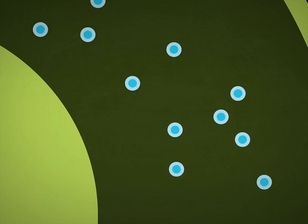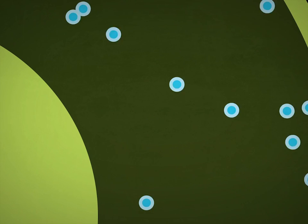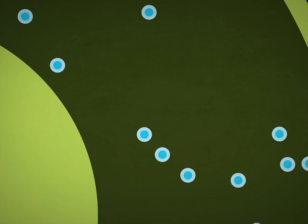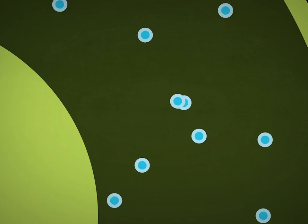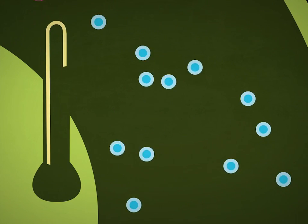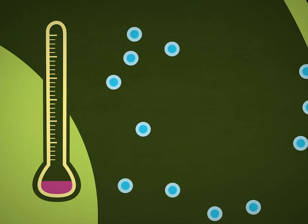When a particle collides with the inside of the tire, it exerts a force. Each particle exerts only a tiny force, but many particles hit the tire. All of these collisions pushing outwards on the tire make up the gas pressure.